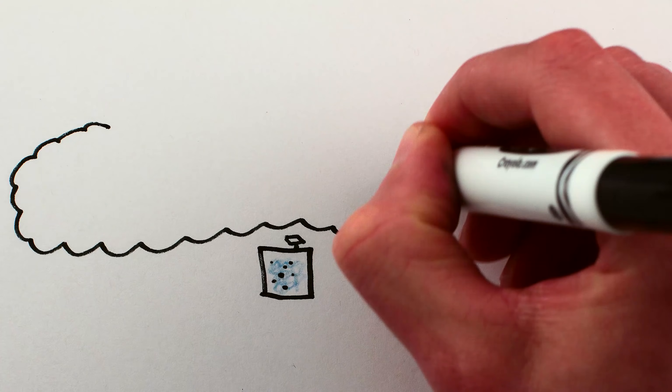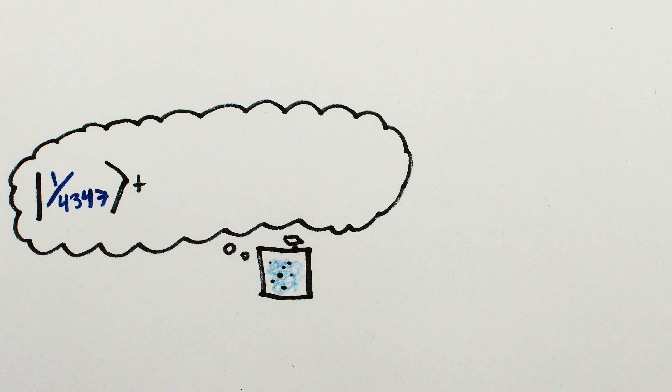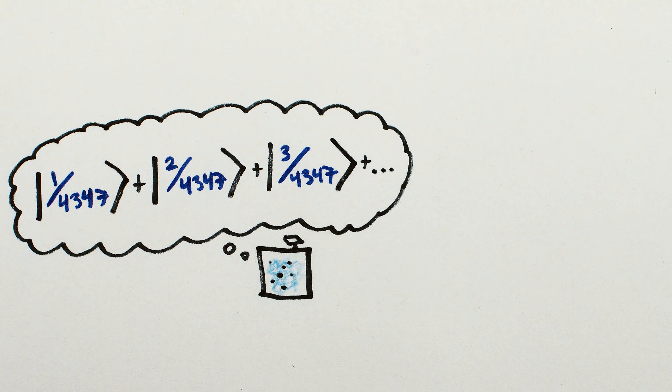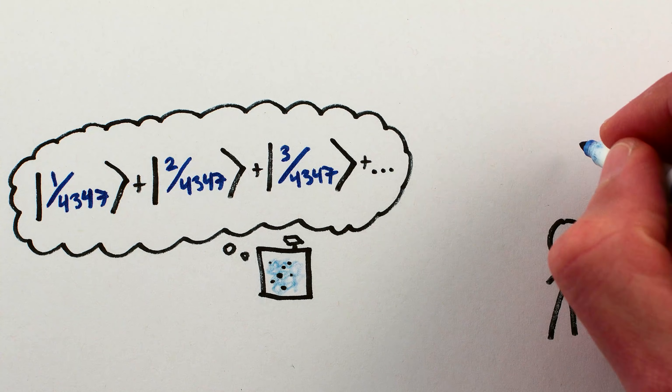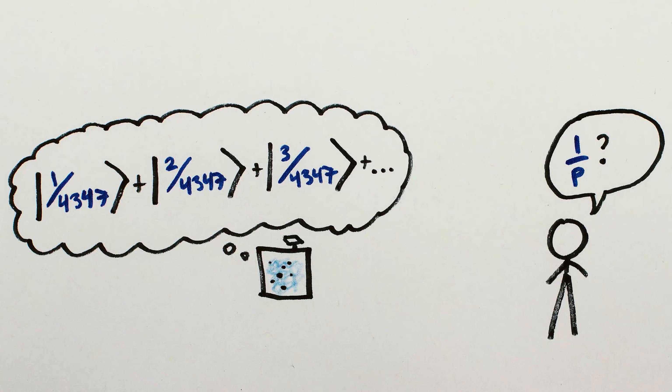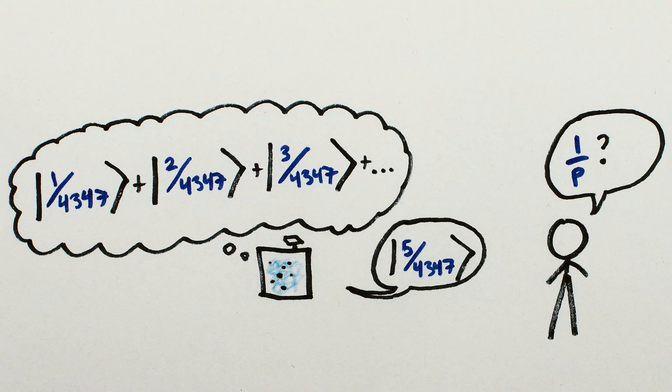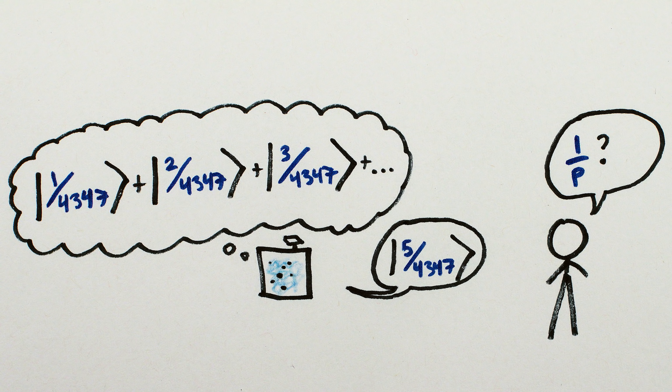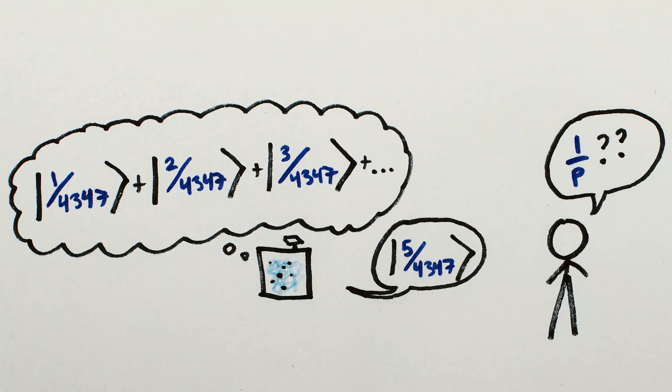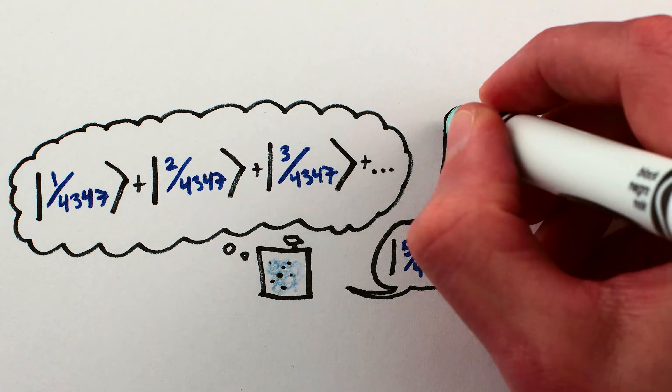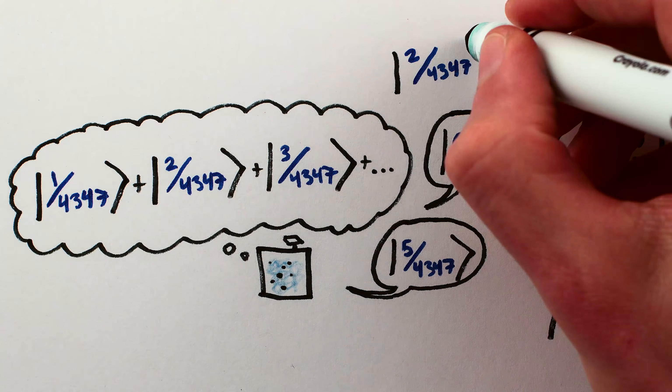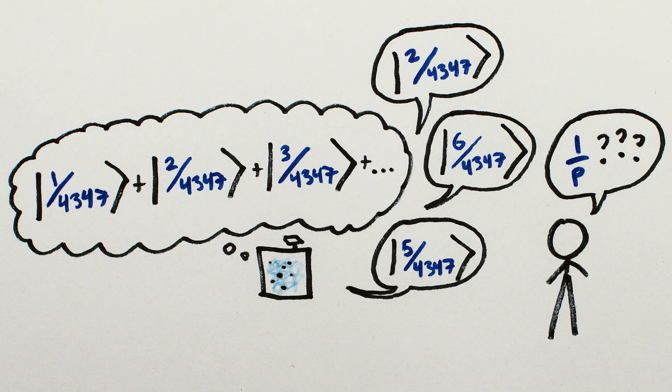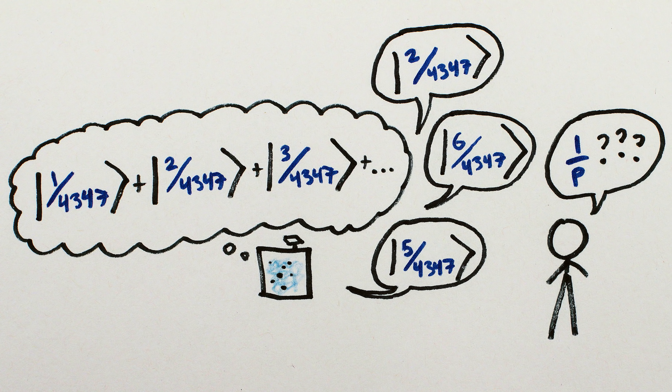Anyway, again, because these are small numbers, I can tell you that we'd have a superposition of 1 over 4347, and 2 over 4347, and 3 over 4347, and so on, but in practice we wouldn't actually know what they were. So we measure the superposition, and we'd randomly get one of the values as the output. Say for example, 5 over 4347. And then we'd do the calculation again and get, say, 6 over 4347, and then 2 over 4347, and so on. Pretty soon we'd be able to tell that 1 over 4347 is the common factor of all of those, and so p is 4347.